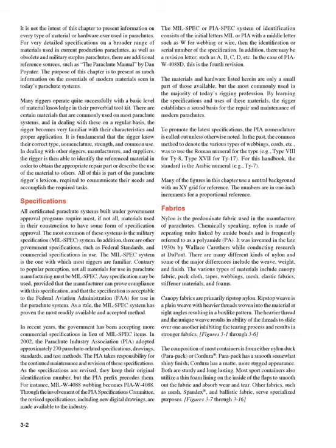In the past, the common method to denote the various types of webbings, cords, etc., was to use the Roman numeral for the type — for example, Type VIII for Type 8, Type XVII for Type 17. For this handbook, the standard is the Arabic numeral, for example, Type 7. Many of the figures in this chapter use a neutral background within a grid for reference, with numbers in 1-inch increments for a proportional reference.